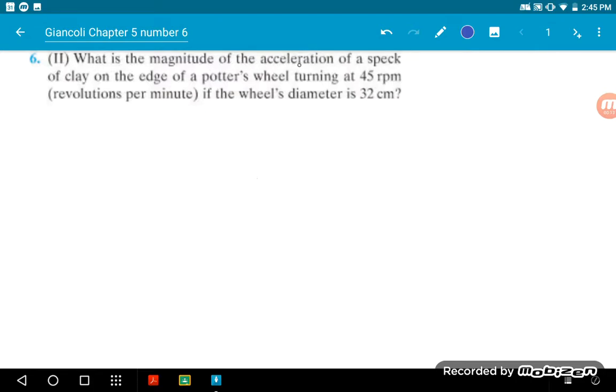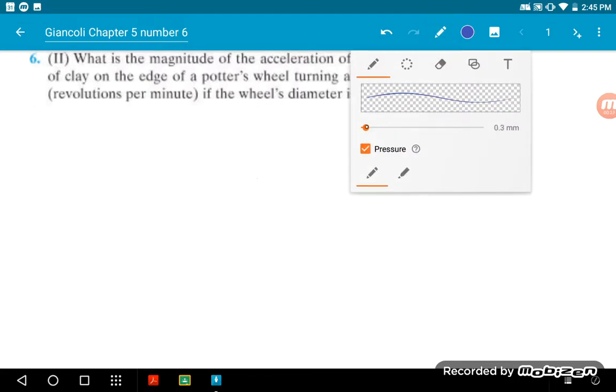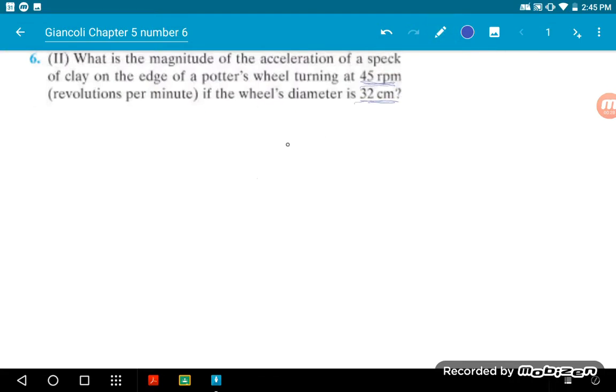What is the magnitude of acceleration of a speck of clay on the edge of a potter's wheel turning at 45 revolutions per minute and the wheel's diameter is 32 centimeters? Here we know that the period is related to 45 revolutions per minute.